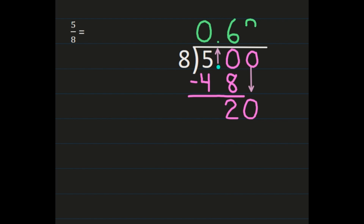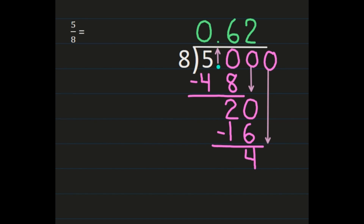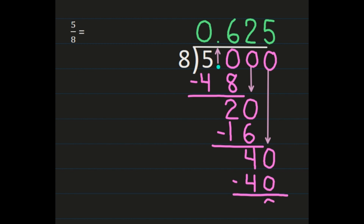So now we have 20 divided by 8, which is 2. 2 times 8 is 16. And 20 minus 16 is 4. We're going to add another 0 and bring it straight down because we want to round to the hundredths place if we're going to round. So we have 40 divided by 8, and 40 divided by 8 is 5. 5 times 8 is 40. And when we subtract, we get 0. Since we get 0, we don't need to add another 0 to bring it down. This will be our answer. And because it's a terminating decimal, we'll leave it at 625 thousandths.